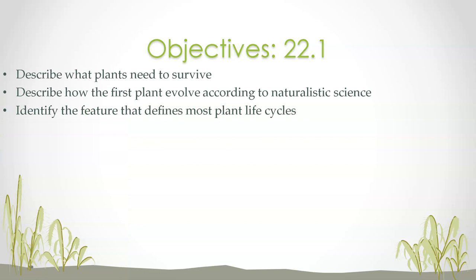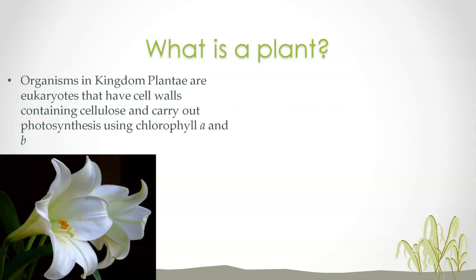This lesson is going to cover two topics in Chapter 22. The first thing we're going to start with is describing what plants need to survive and how plants first evolved, of course according to naturalistic science. We believe God created plants as a kind in Genesis — this is a Christian school. We'll also identify the feature that defines most plant life cycles. So first off, what is a plant?